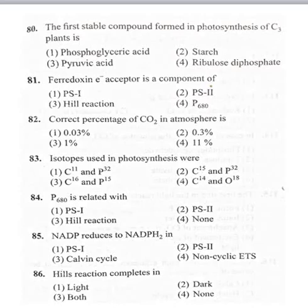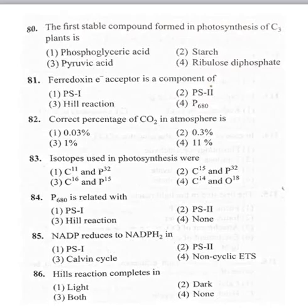85th bit: NADP reduces to NADPH2 in — option 1 photosystem 1, option 2 photosystem 2, option 3 Calvin cycle, option 4 non-cyclic electron transport system. In non-cyclic electron transport, light falls on the pigments, electrons get excited and are captured by electron carriers. The excited electrons pass through electron carriers and finally reach NADP, reducing it to NADPH2.